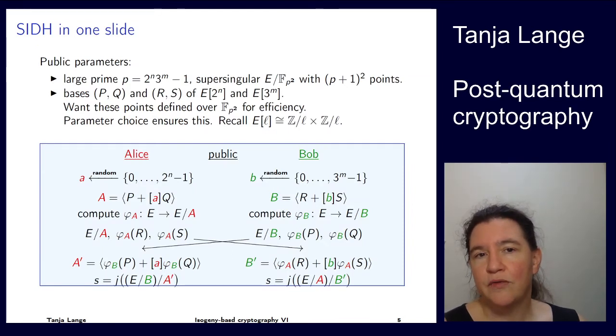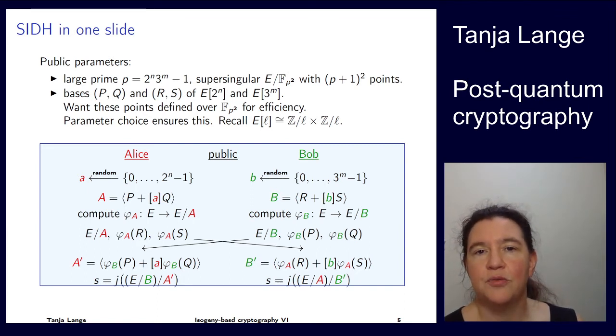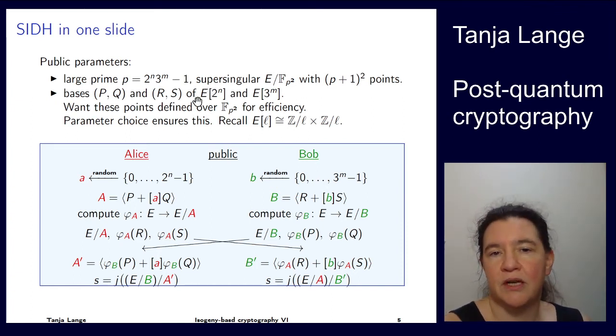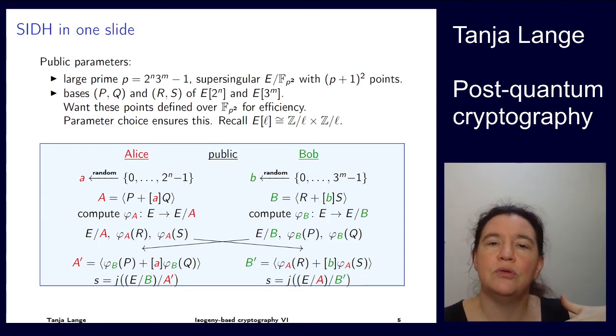So here is the one slide overview of what we actually have. I had already mentioned that Alice is using 2 to the n isogenies, Bob is using 3 to the m isogenies. And so we want to have that both of those are divisors of p. So similar to C-SIDH, we're picking very special primes. We're looking for primes p which have this shape: power of 2 times power of 3 minus 1. And then we go for the case of supersingular elliptic curves, which have p plus 1 squared points. So if it's p plus 1, that's just 2 to the n, 3 to the m squared. So we're having exactly 2 to the 2n, 3 to the 2m points. And that means that the basis of these 2 to the n torsion and 3 to the m torsion are all defined over this fp squared.